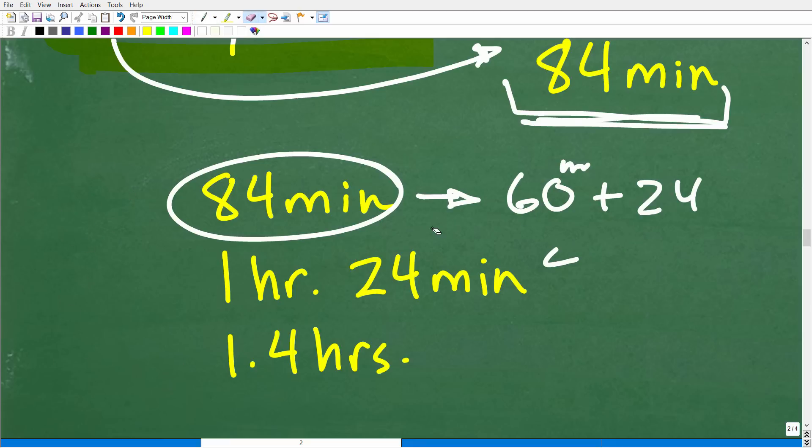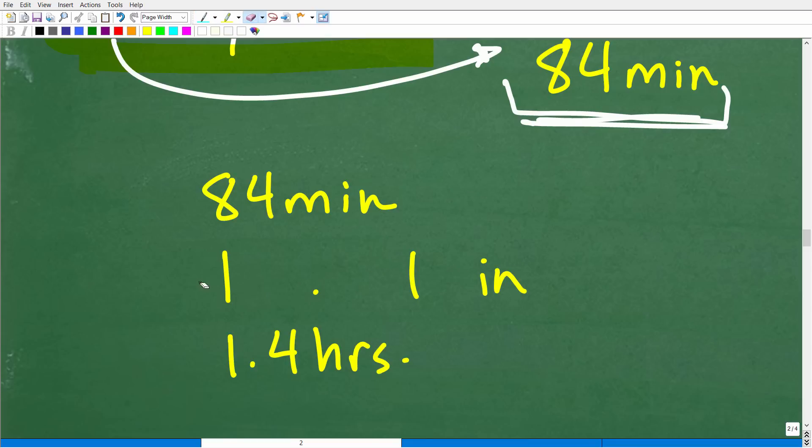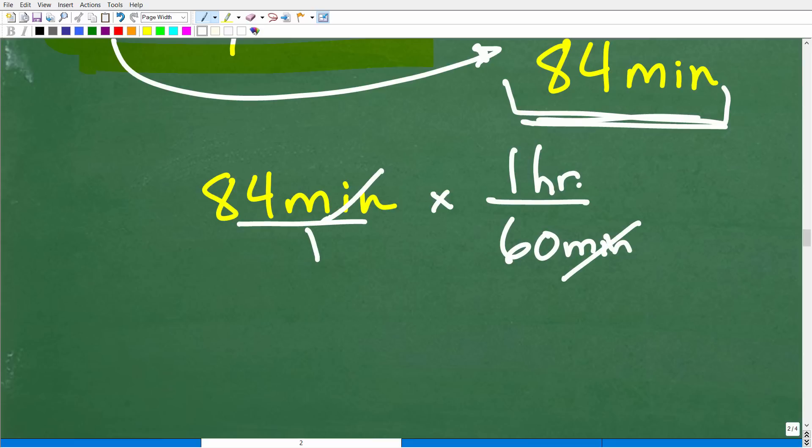Real quick, let me just show you for those of you that don't know how to convert units of measure. This is really important. So 84 minutes, what we're going to do is multiply 84 minutes times a conversion factor. So 84 minutes, we want to get rid of the minutes and be left with hours. So there is one hour in 60 minutes. I need the minutes down here in the denominator because the minutes need to cross-cancel. So when we multiply fractions, that's why we're going to end up with 84 over 60. And the units of measure that are left over is hours.